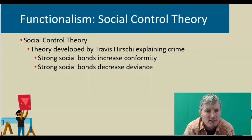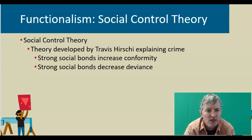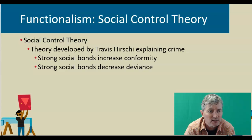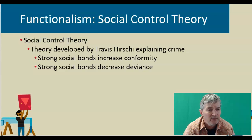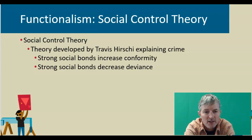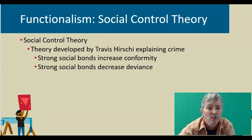The functionalists adhere to a social control theory. This theory was developed by Travis Hirschi and explains crime. Strong bonds increase conformity and strong bonds decrease deviance. These strong bonds include family, religion, and civic ties, among others. And those will hopefully have an impact on individuals and prevent them from engaging in criminal acts. But who knows — maybe your family's criminal, so they pass on those norms to you and you buck the social system.